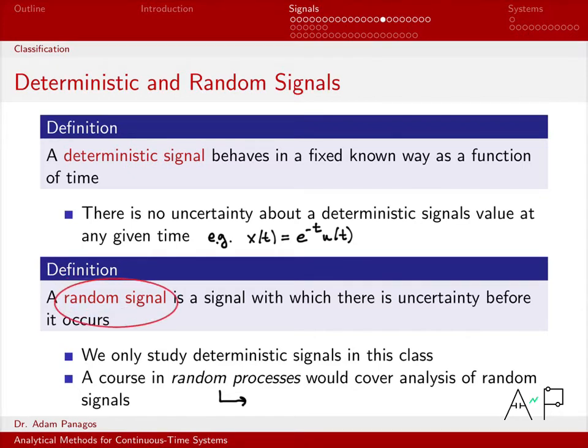How you treat random signals is radically different than how you treat deterministic signals. You need completely different mathematics to analyze and think about how random signals interact in linear systems, how you describe the output of a linear system when the input was random and things like that. If you go on and take a course in random processes, the notation itself is going to be your clue that you're dealing with random signals.